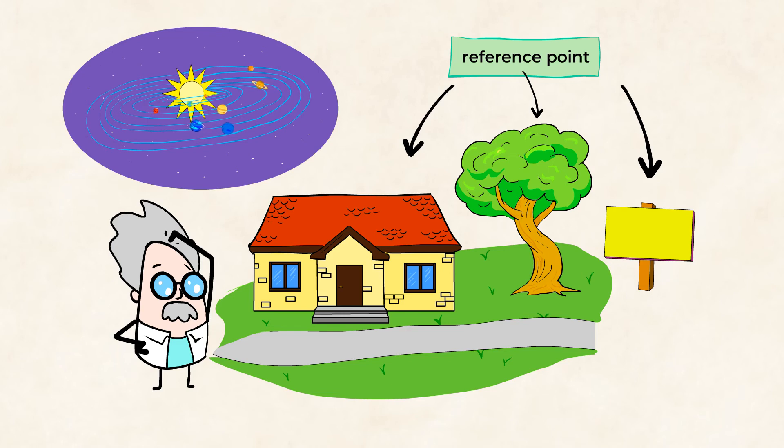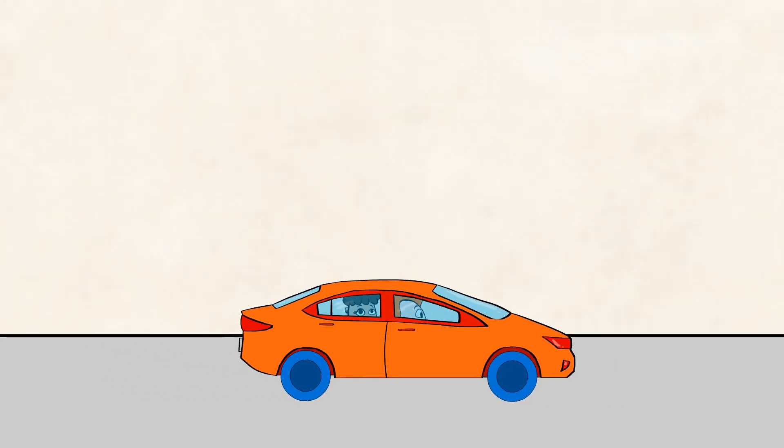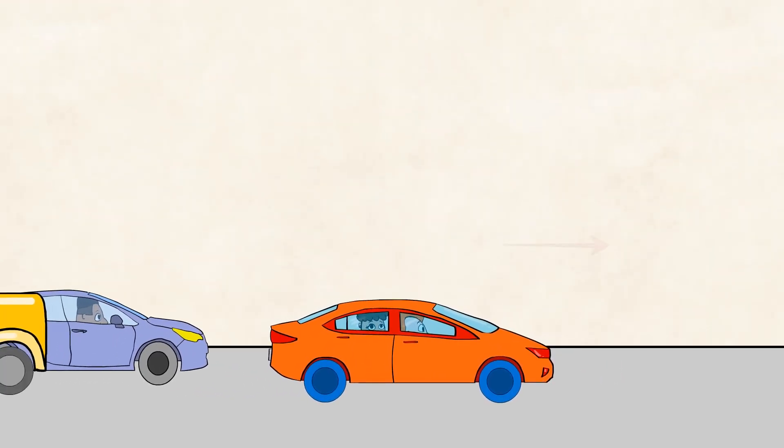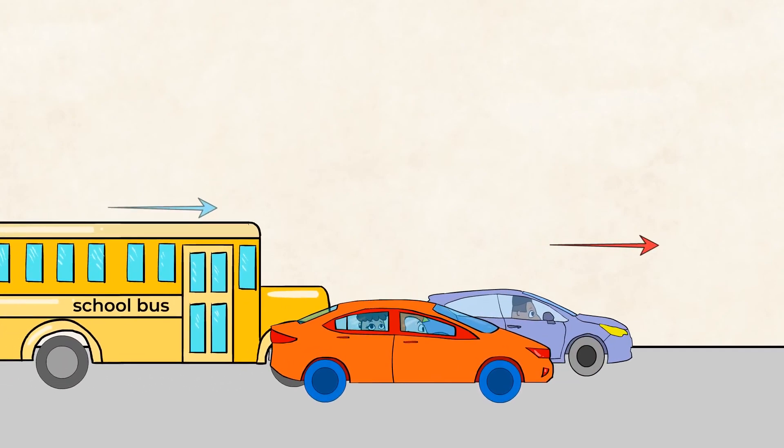It's helpful if our reference points are standing still, so that we can compare ourselves to them. But not all reference points have to be still. Look out the window when you're riding in a car, and you can see cars next to you moving faster than your car, and others that are moving slower. Moving faster or slower is another way to describe motion.